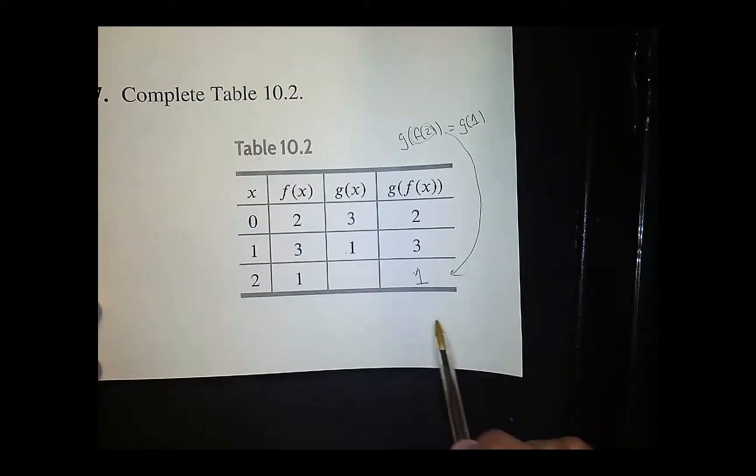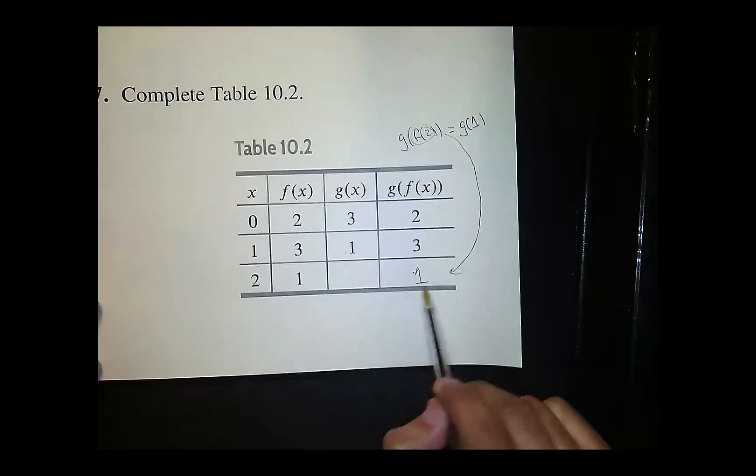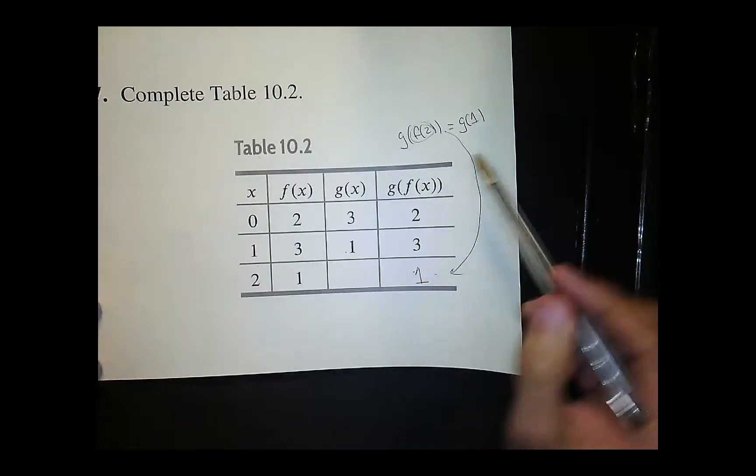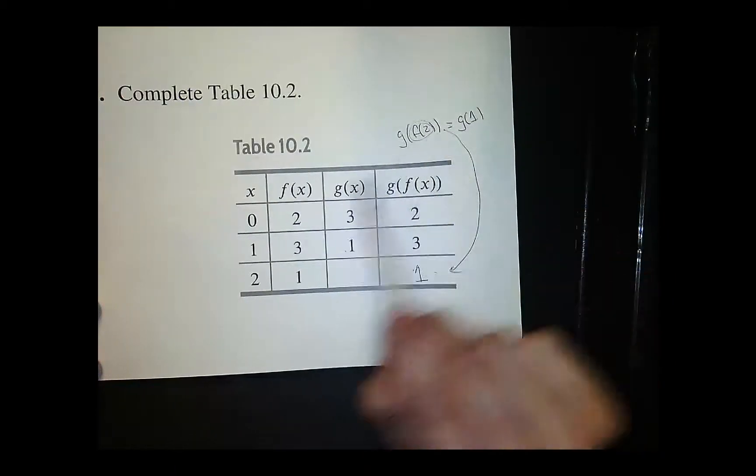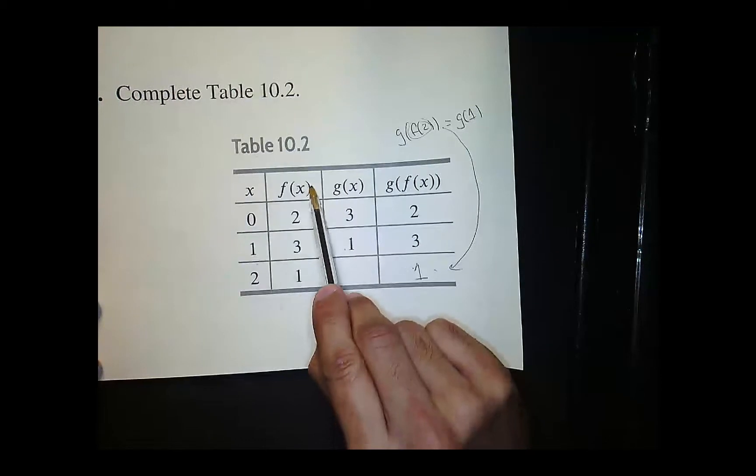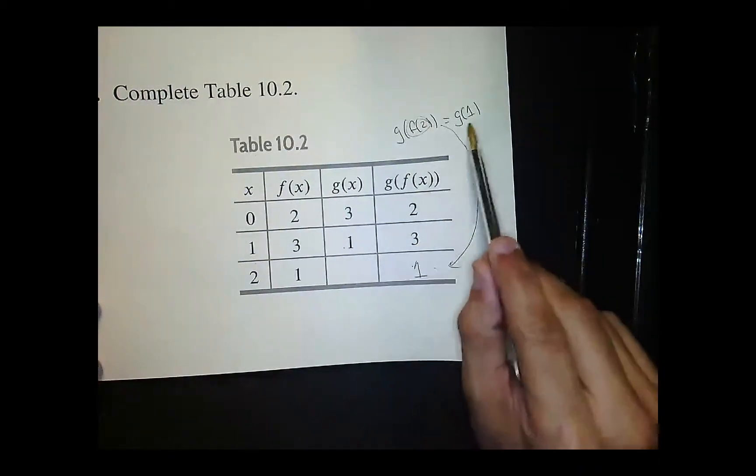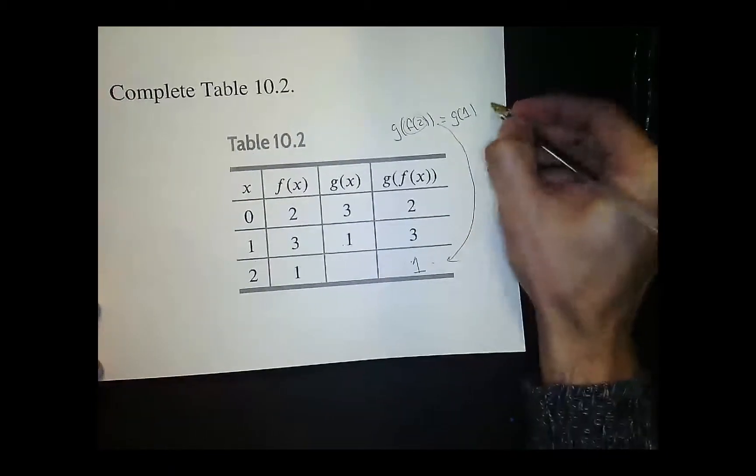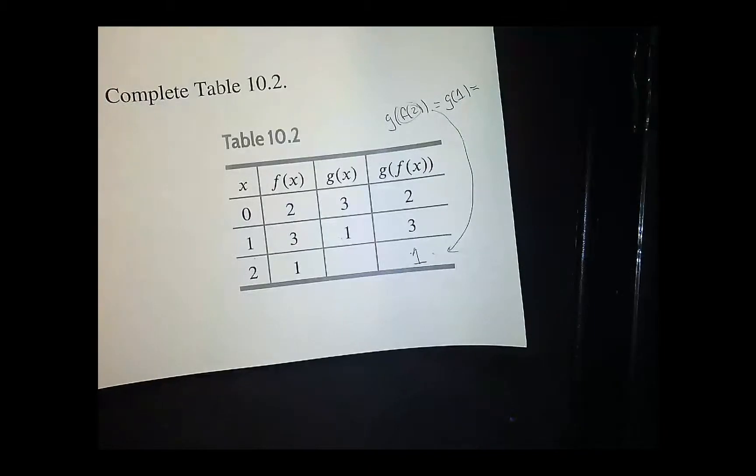As you can see I started some work here. I wanted to find this missing value here which is g of f of 2. And so I went ahead and I found f of 2 and I get 1. So f of 2 is 1. So I replaced the f of 2 with 1 and then I went ahead and I found g of 1 and g of 1 is 1. And that's how I got my answer for that.